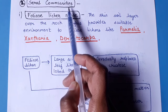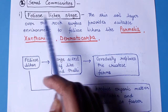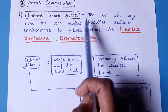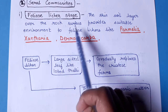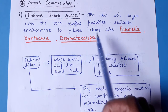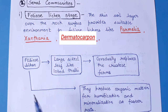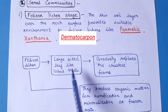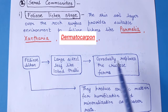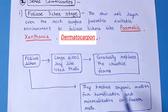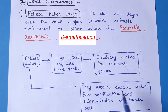The first seral stage is the foliose lichen stage. After the crustose lichens, a thin layer of soil develops over the rock surface, providing a suitable environment for foliose lichens like Parmelia, Xanthoria, and Dermatocarpa. These are large, leaf-like lichens with lobed thalli. They gradually replace the crustose forms and produce organic matter for humification and mineralization at a faster rate.